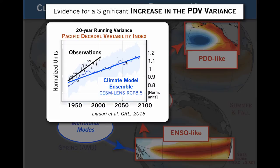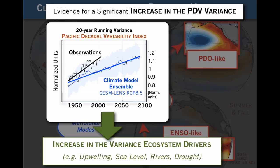This suggests that if you increase the Pacific Decadal variance, you also expect to increase the variance of traditional ecosystem drivers — both in the coastal ocean, open ocean, and on land. In particular, I'm going to explore some of these ecosystem drivers: upwelling indices, sea level gauges, tide gauges, rivers, and droughts — more of a land component — because we have long-term observations of these things, allowing us to test this hypothesis.